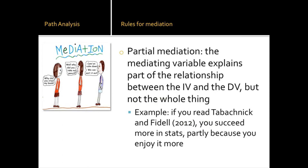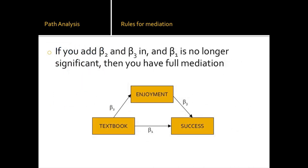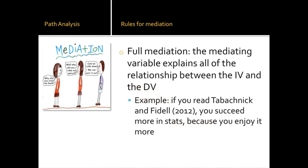Partial mediation means the mediating variable explains part of the relationship. For example, if you read Tabachnik and Fidel's 2012 'Using Multivariate Statistics,' you succeed more in stats, and it's partly because you enjoy it more. The full mediation model is when that beta one disappears — it starts out significant and then disappears — meaning that enjoyment has now explained the whole relationship. The mediating variable explains all of the relationship, causing that original beta one to go from significant to not significant. So you succeed more in stats solely because you enjoy it more.